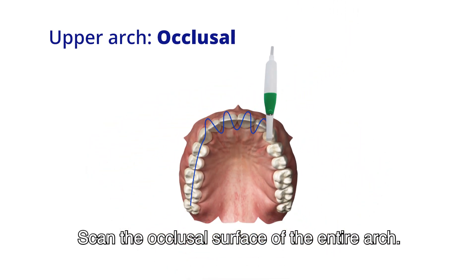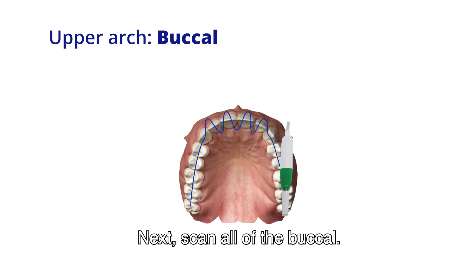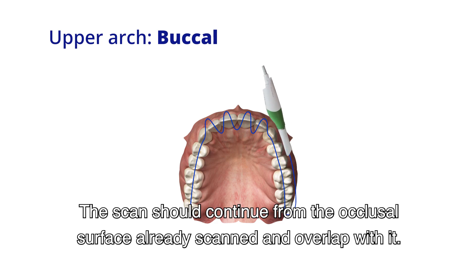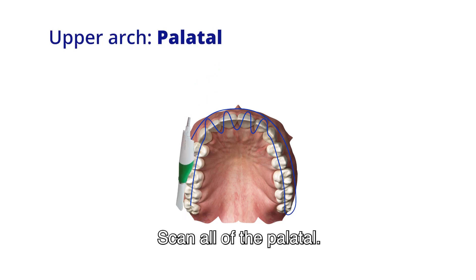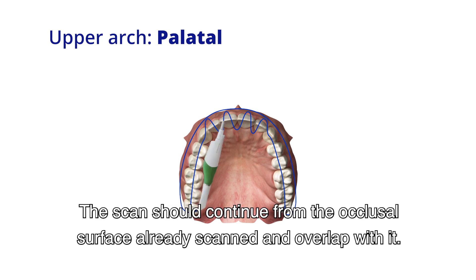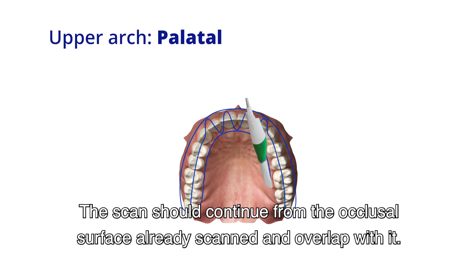Scan the occlusal surface of the entire arch. Next, scan all of the buccal. The scan should continue from the occlusal surface already scanned and overlap with it. Then scan all of the palatal. The scan should continue from the occlusal surface already scanned and overlap with it.